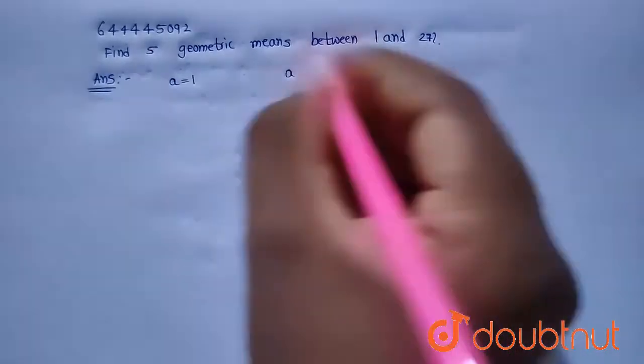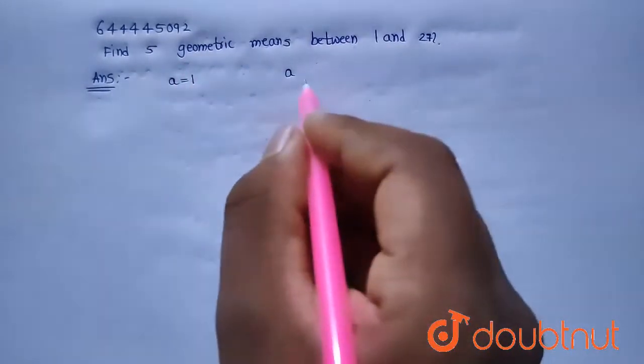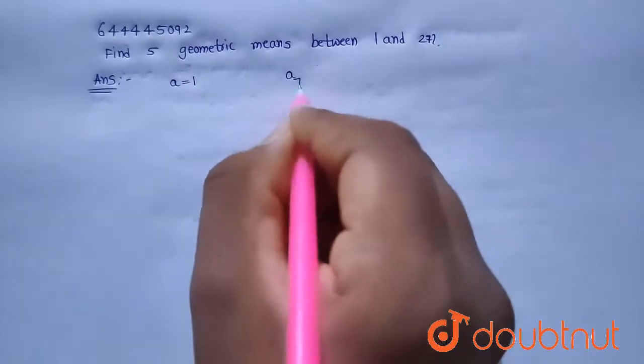and because there are five geometric means, it will become the seventh term. Since 1 is the first term and there are five geometric means in between, the seventh term will be 27.